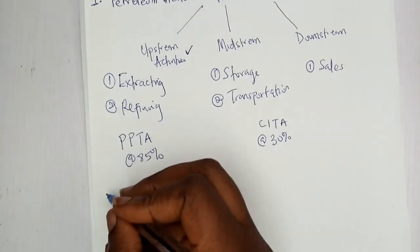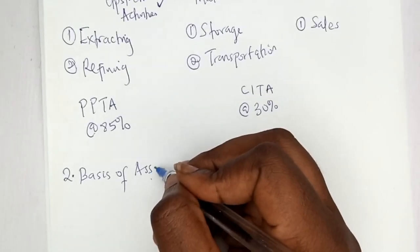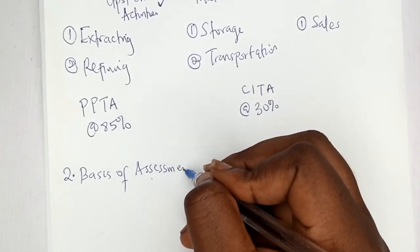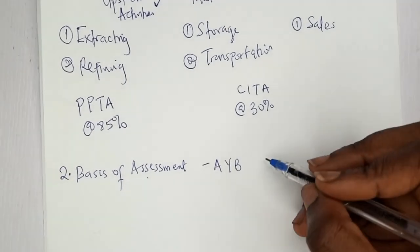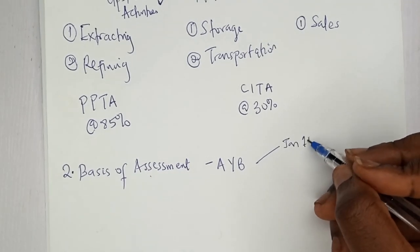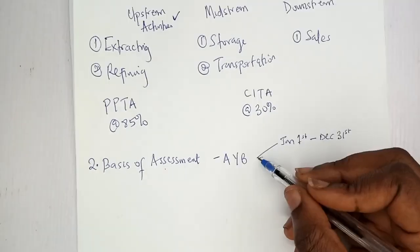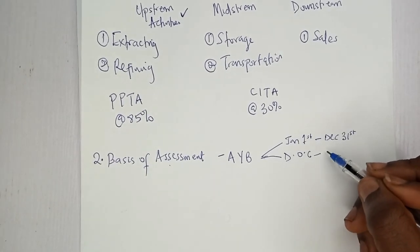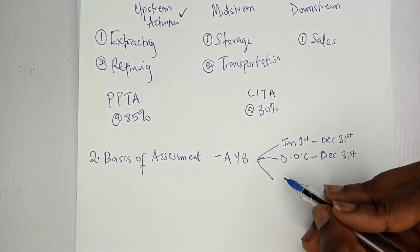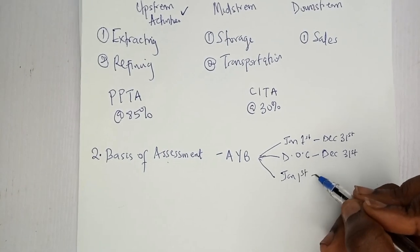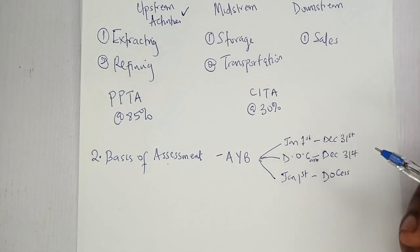Moving to the basis of assessment — in Petroleum Profit Tax, you assess on an actual year basis. The actual year basis runs from January 1st to December 31st of any calendar or accounting year. It could also run from the date of commencement to December 31st, or from January 1st to the date of cessation, depending on the company's situation.